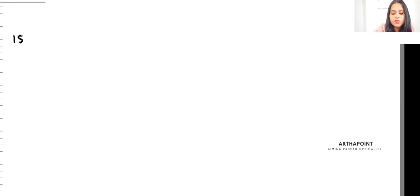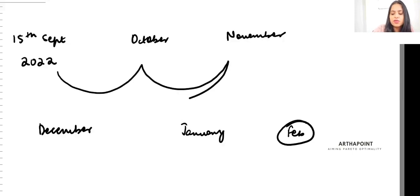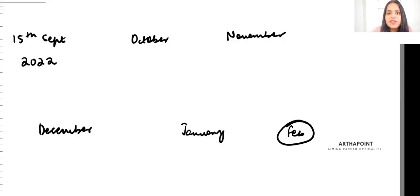Note that today is 15th of September 2022. You have October, November, December, and January. The paper is 12th of Feb. So in order to go ahead and cover your syllabus, you approximately have five months. What should be your strategy for these five months?